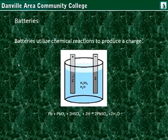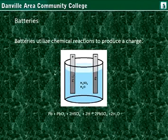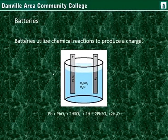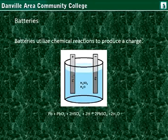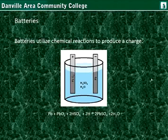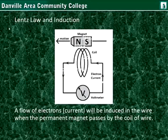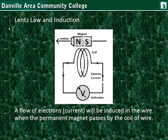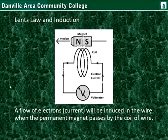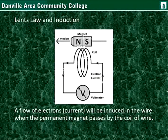Batteries utilize chemical reactions to produce a charge. Here is an example of an acid battery using sulfuric acid. There are two lead bars in this single cell battery. The reaction is shown below. An alternative to electrochemical sources is the generator. The generator was created by the understanding of electromagnetic induction, where a flow of electrons, or current, will be induced in the wire when the permanent magnet passes by.